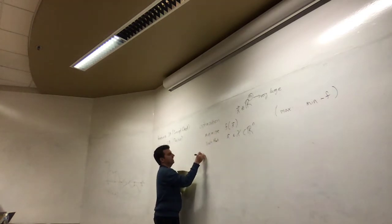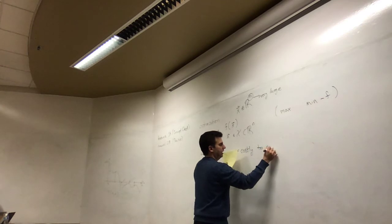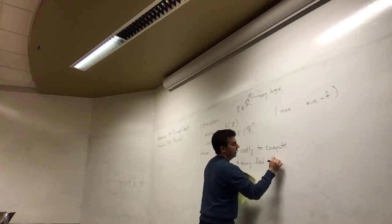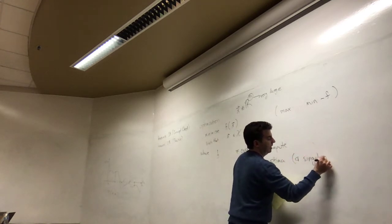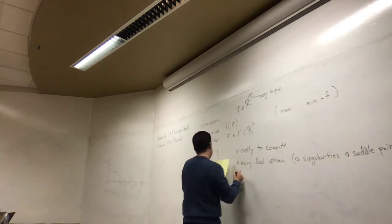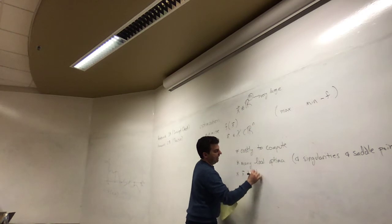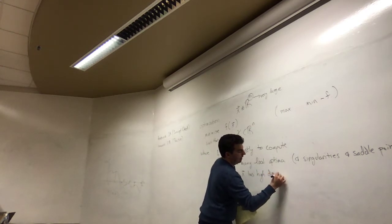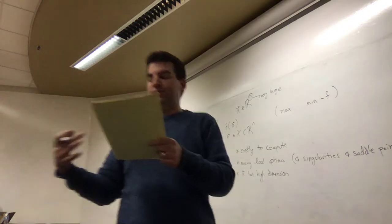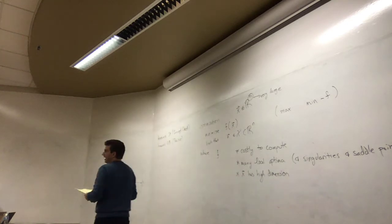Thinking about this function F: it may be costly to compute. It may have many local optima, singularities, and saddle points. And it may be a function of many variables, so x has high dimension. Once we start working in this space, it becomes difficult to use standard methods for optimization. F need not be a mathematical function — it could be a simulation, a high-fidelity simulation model of a physical process. F could be a simulation of a jet engine that maybe takes a week to run one replication.